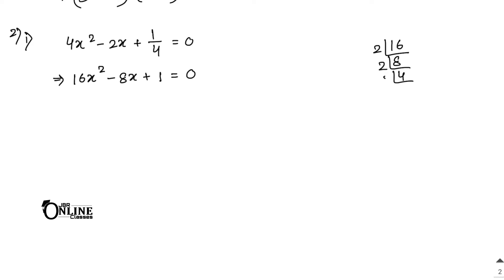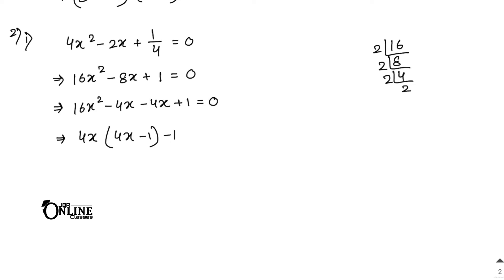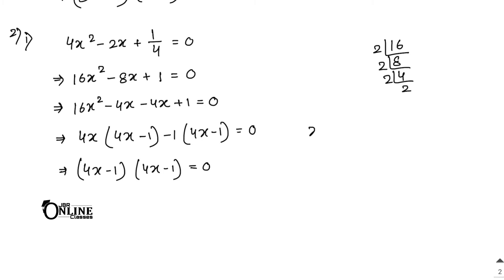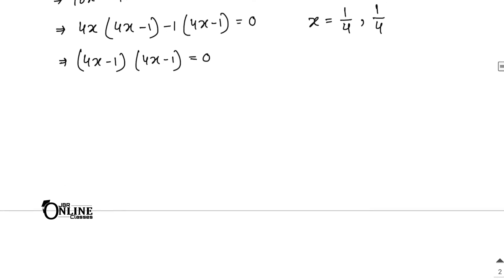Factorizing 16: 2×8, then 2×4, then 2×2, so we need to make 8. Write as 16x² - 4x - 4x + 1 = 0. Taking 4x common gives (4x - 1), and taking -1 common also gives (4x - 1). So (4x - 1)² = 0, giving equal roots x = 1/4 and x = 1/4.